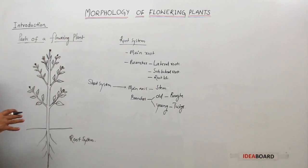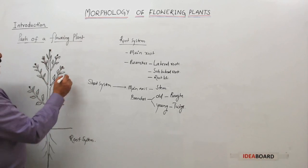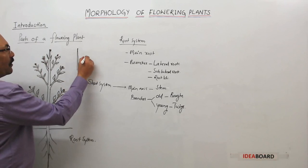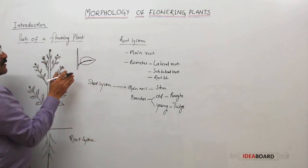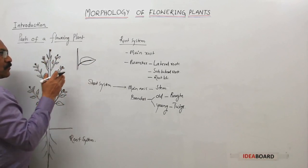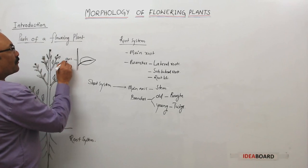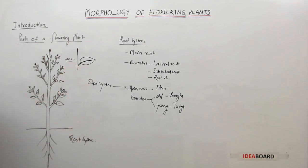On all these branches, you will find leaves. The leaves are arranged acropetally — that means the older leaves are at the base and the younger ones toward the apex. When you take a branch or the stem, you will find a leaf. The leaf has an upper surface and a lower surface — it is a dorsiventral leaf. The upper angle between the leaf and the axis is called the axil.